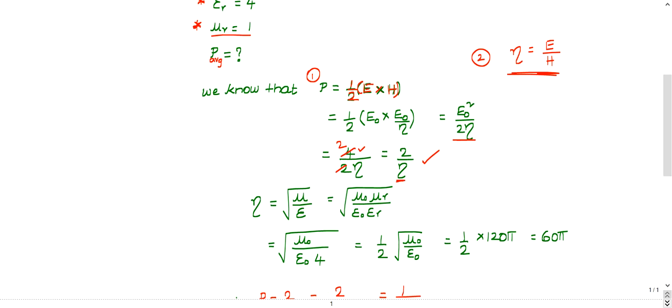Then what is this η? We need to calculate. η is nothing but, this is the third formula we should know. η is nothing but under root μ by ε. μ is nothing but μ₀ into μr. ε is nothing but ε₀ into εr.